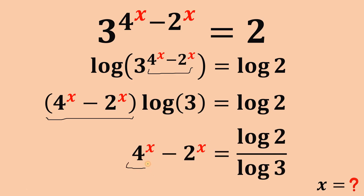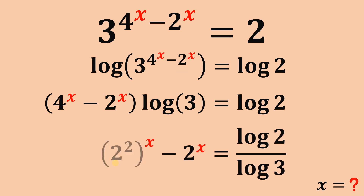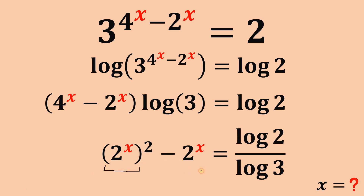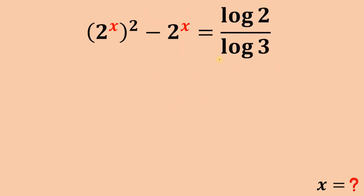Now focus on this 4. A while ago we replaced this 4 with 2 raised to the power of 2, so we will do that again. And 2 raised to the power of 2 raised to the power of x — we can interchange the exponents x and 2, so we can rewrite this as 2 raised to the power of x raised to the power of 2. We do this because we have the same term 2 raised to the power of x. Let's replace the constant logarithm of 2 over logarithm of 3 as k to simplify the equation.